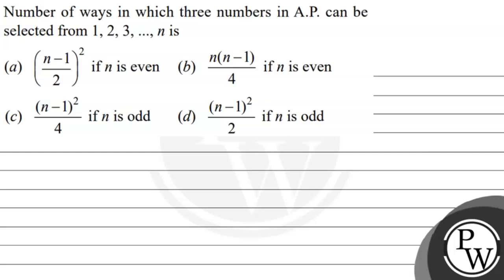Hello, let's see the question. The question says: number of ways in which three numbers in AP can be selected from 1, 2, 3 up to n.